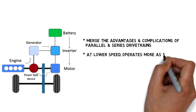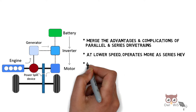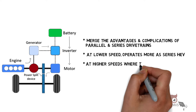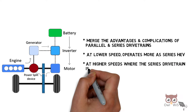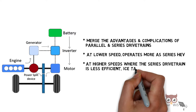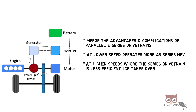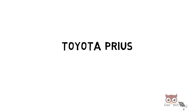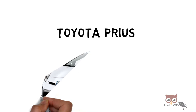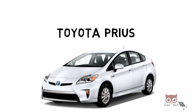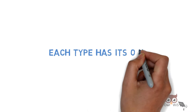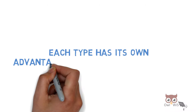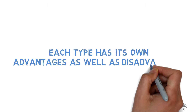They merge the advantages and complications of parallel and series drivetrains. At lower speeds they operate more as a series HEV, and at higher speeds, where the series drivetrain is less efficient, the ICE takes over. Toyota Prius is an example of series-parallel HEV. Each type has its own advantages as well as disadvantages.